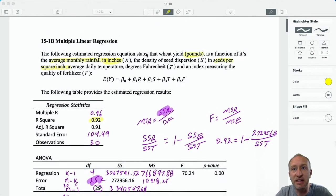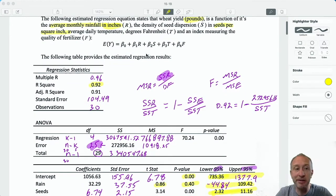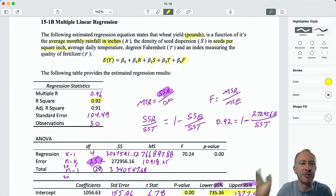We're in problem 15.1b. In the first video, we spent probably a good half an hour or so filling out this partial Excel output for this multiple regression model that relates a few variables here. We have rainfall, density of seed dispersion, temperature, and an index measuring the quality of fertilizer being used to predict wheat yield. So an agricultural model.